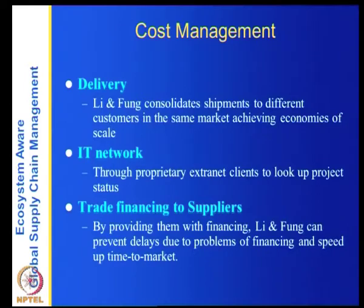Can Li and Fung be disintermediated? Suppose there is an order for 10 million. Commission paid if orders are placed through Li and Fung at 7 percent — Li and Fung gets 700,000. If a customer tries to replicate Li and Fung themselves, the cost of maintaining a Hong Kong office, an expatriate manager, 20 staff at 30,000 a year, rent and other expenses, comes to 1,360,000. So the savings from using Li and Fung are clear — and even spending more, the customer still cannot guarantee quality.